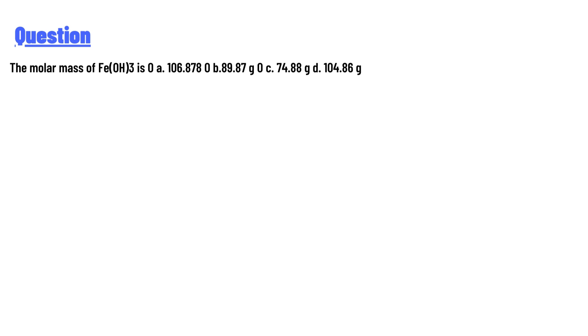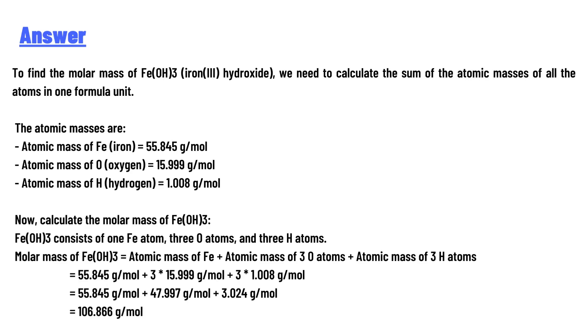And the answer to the question is: to find the molar mass of Fe(OH)3, iron(III) hydroxide, we need to calculate the sum of the atomic masses of all the atoms in one formula unit.